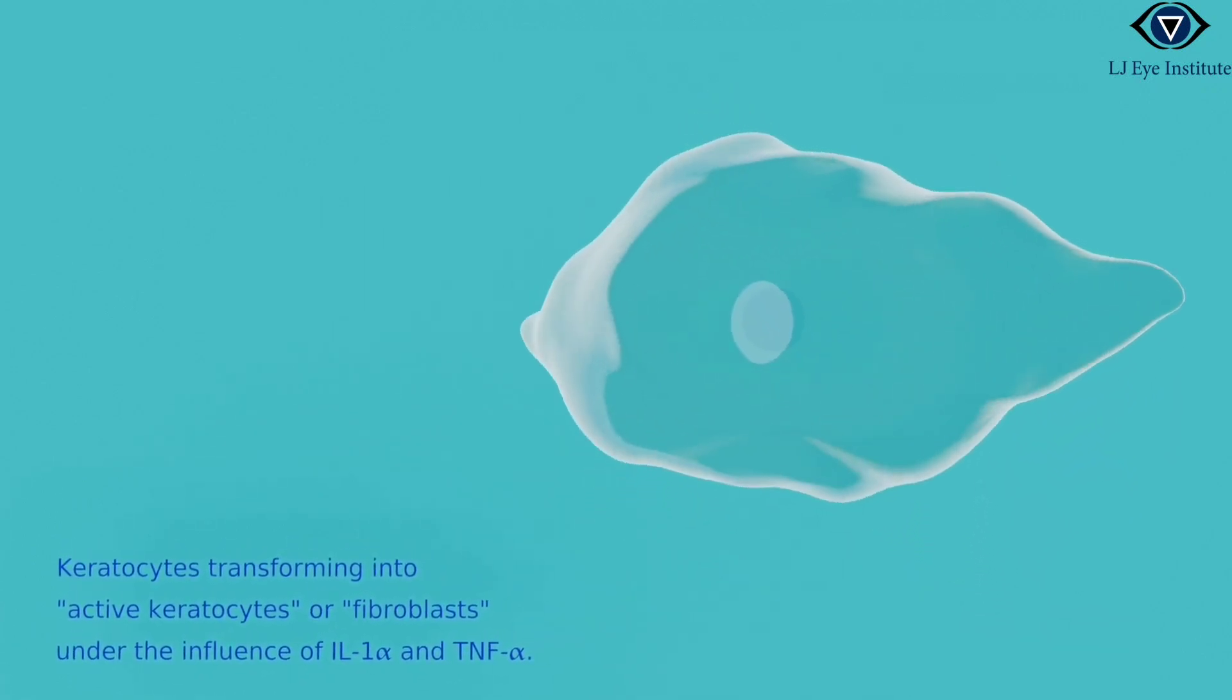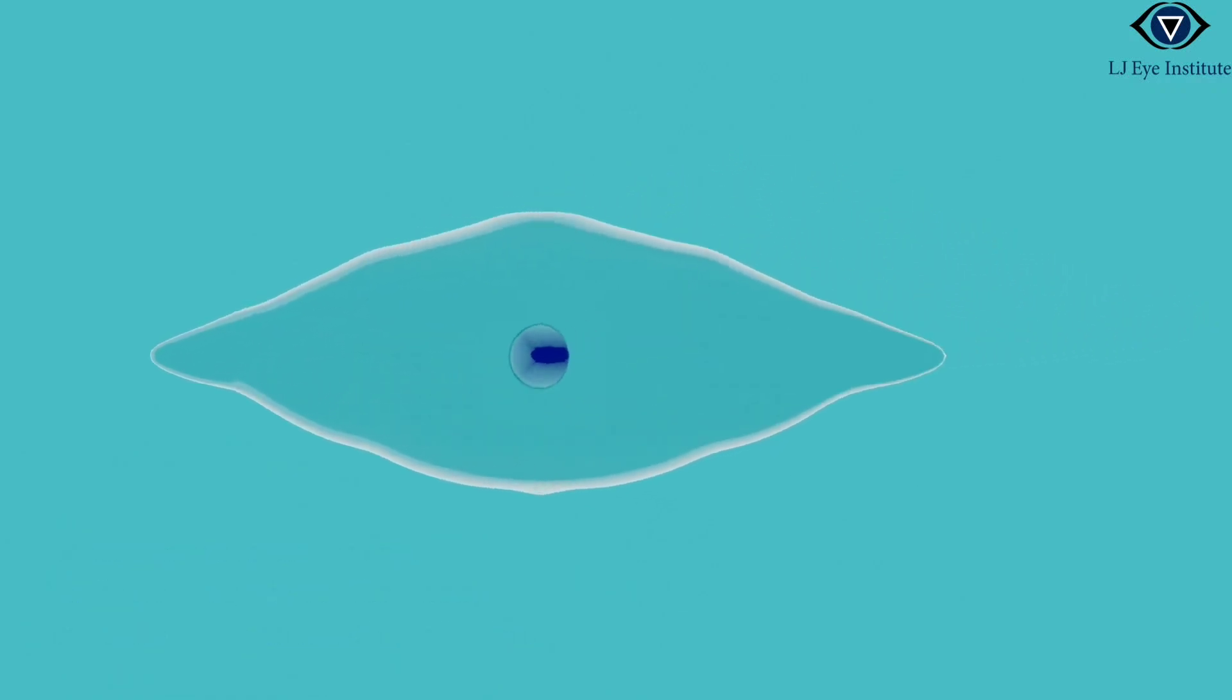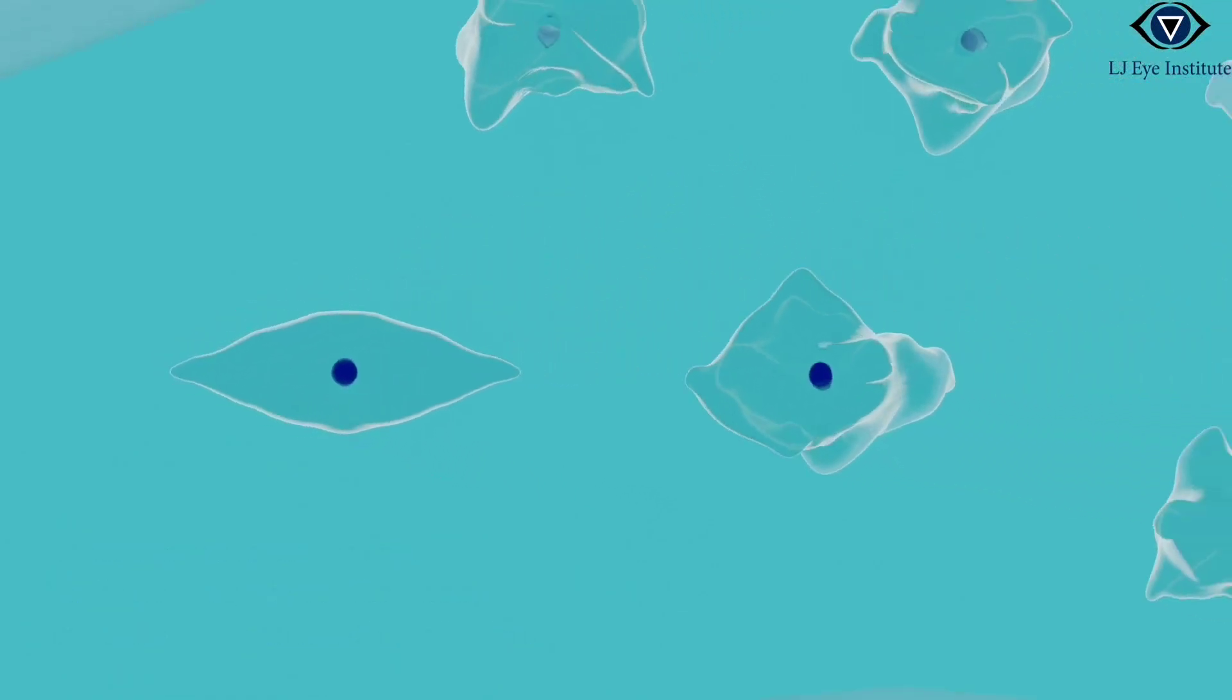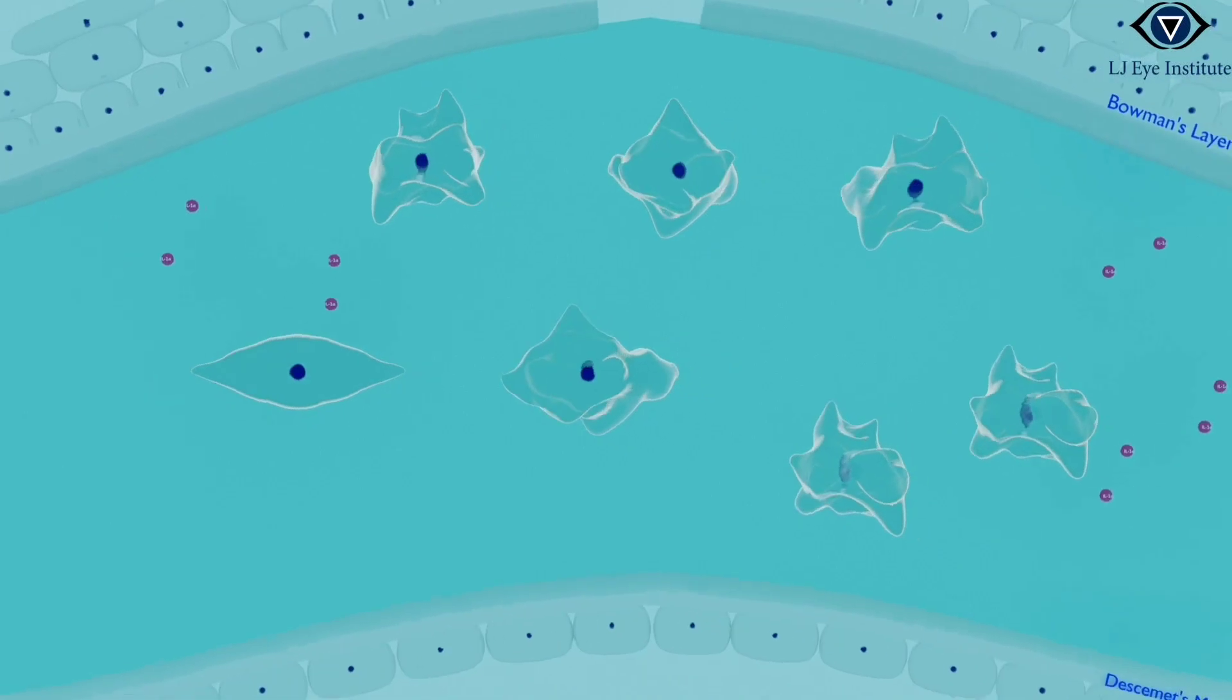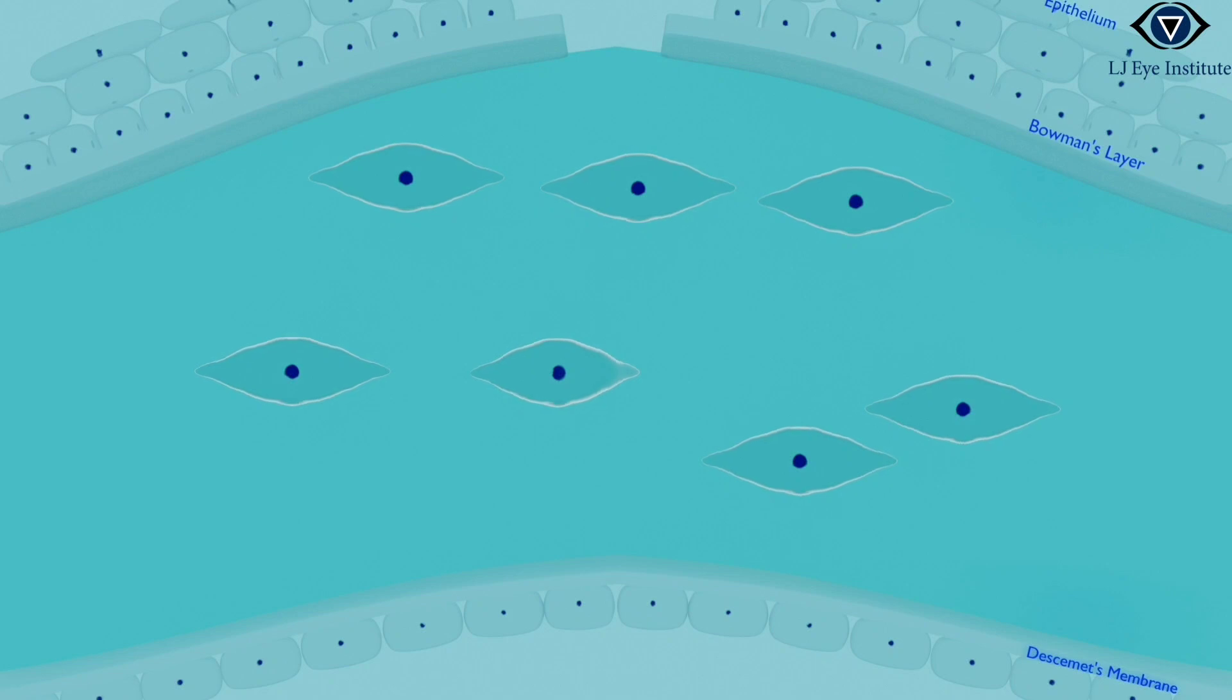These fibroblasts are like skilled repairmen, patching up the cornea with new tissue, ensuring that any damage is quickly and effectively repaired. In the face of more severe injuries, certain keratocytes take on an even more formidable role. They undergo a metamorphosis into myofibroblasts, adopting a fusiform shape and sprouting multiple nucleoli.